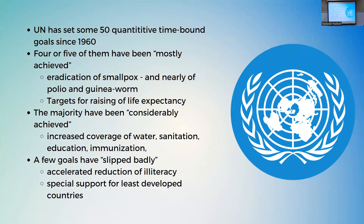The UN has set goals that may seem too ambitious. But the UN has actually set about 50 quantitative time-bound goals similar to this since 1960. Four or five of these goals have been mostly achieved — examples include the eradication of smallpox, the near eradication of polio and guinea worms. Others are targets for raising life expectancy. The majority of the 50 goals set since then were considerably achieved, including increased coverage of water, sanitation, education, and immunization for everyone around the world.